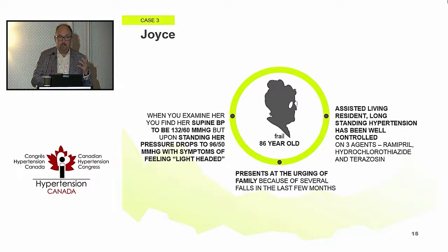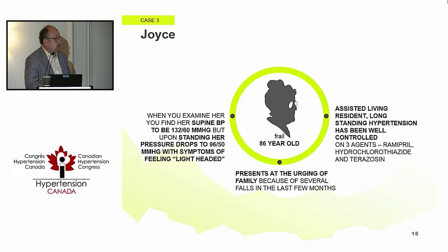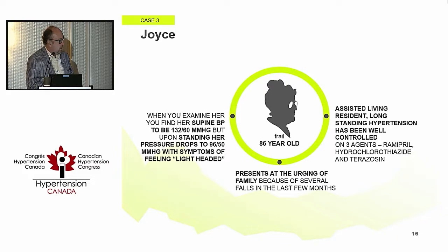This is Joyce — 86 years old, a little on the frail side, an assisted living resident with long-standing hypertension, well-controlled on three agents: ramipril, hydrochlorothiazide, and terazosin. She presents with a couple of falls. When you examine her, blood pressure was a little high relative to the SPRINT target, but drops to 96 over 50.